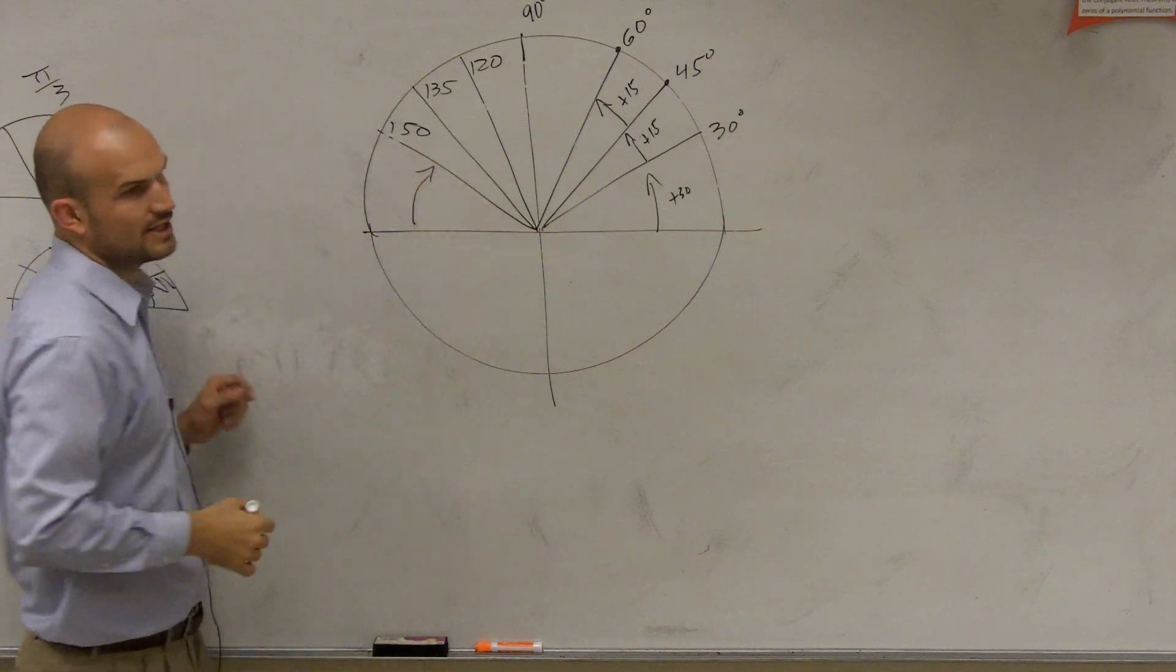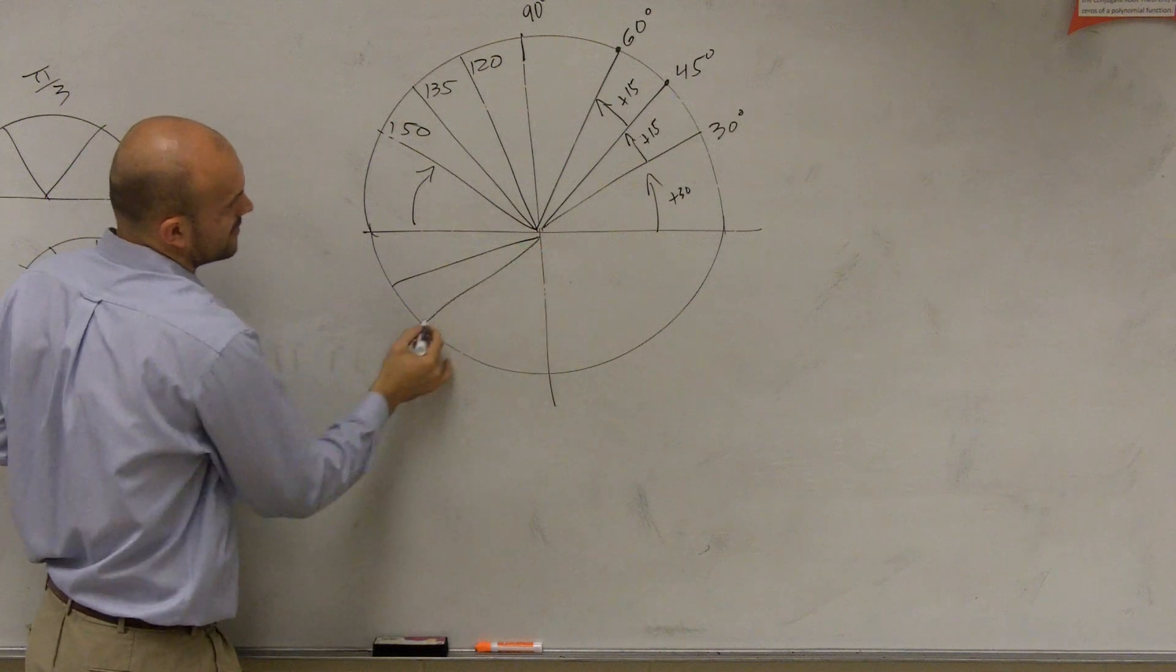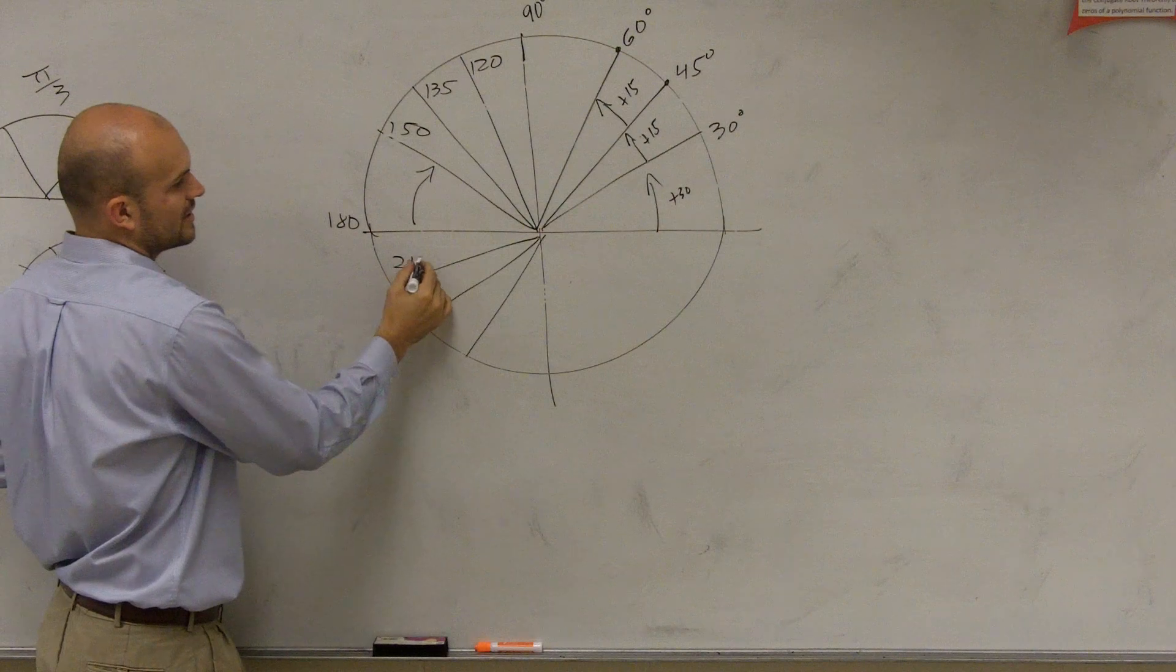And then again, is it from here to here 30? Yes. So then again, you could just do add 30, 15, 15. So add 30 to 180, you're going to get 210.